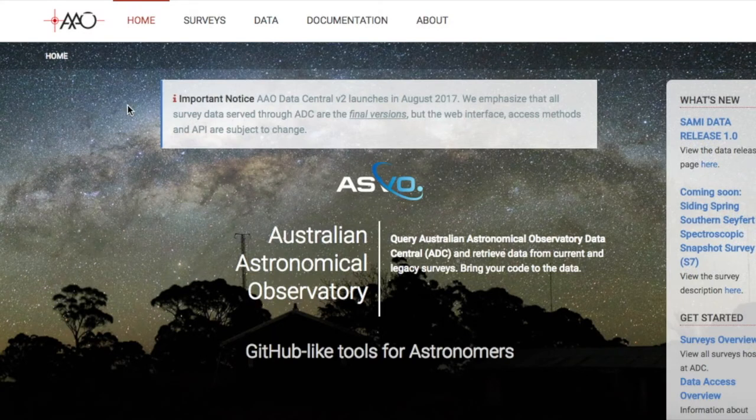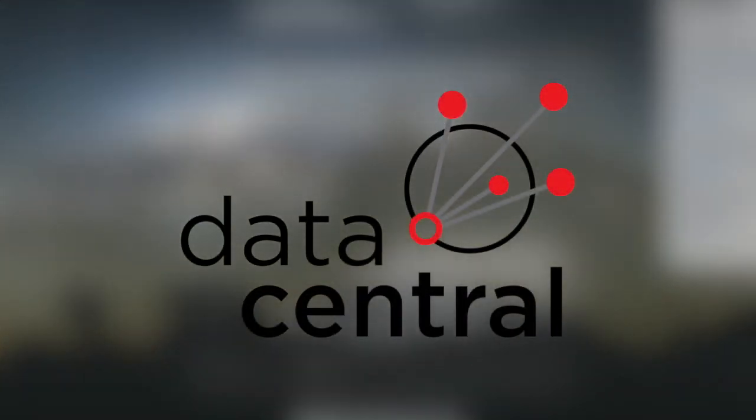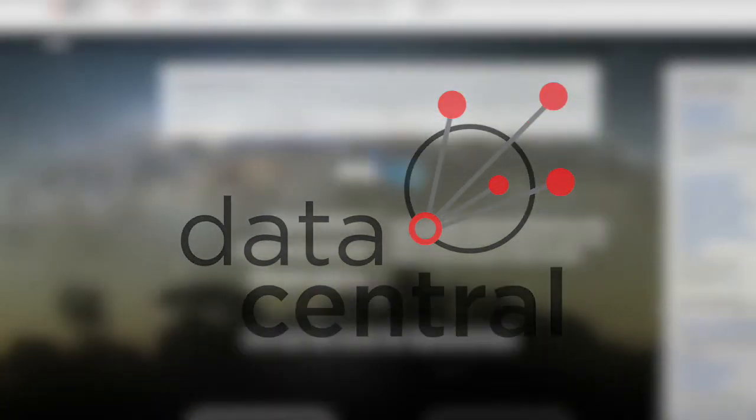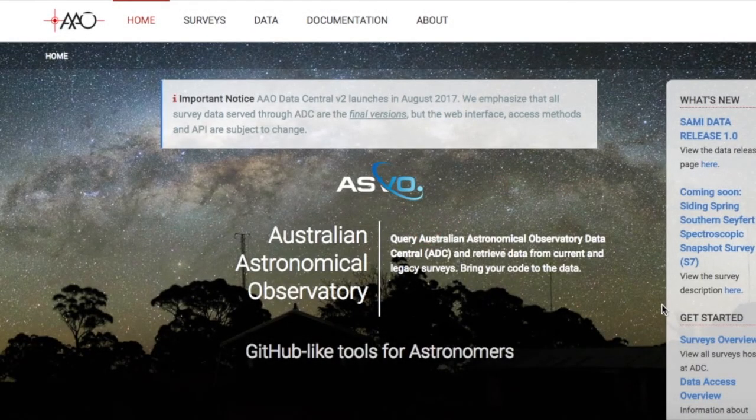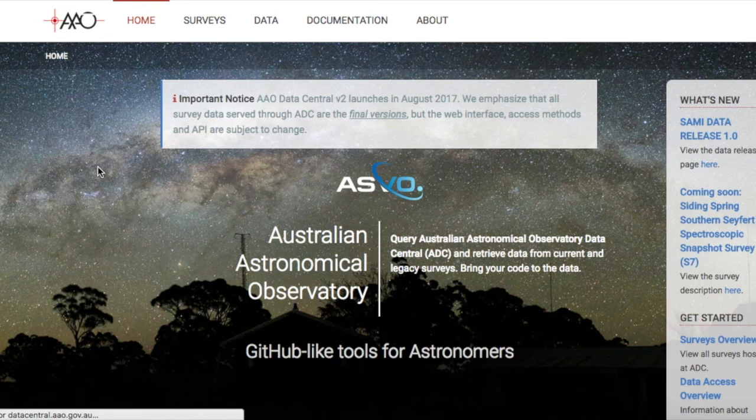The original spectral cubes and the value-added products are uploaded onto the Australian Astronomical Observatory's archive, Data Central. This is a public online data analysis sharing system available to astronomers around the world. It consists of optical astronomical data of significance to Australian astronomers, and makes accessing archived and current survey data easier and more readily available for all astronomers.